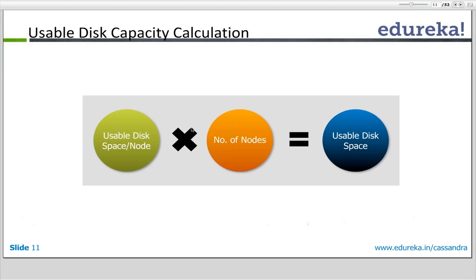As discussed earlier, disks need extra space for internal processes, so not all disk capacity is available to the end user. We have to calculate the usable disk capacity first. There are certain factors to consider, like various operations happening on disk and Cassandra internal processes. For example, compaction requires extra space to do its processing. We will discuss in detail in the next slide how to compute usable disk capacity and user data size.